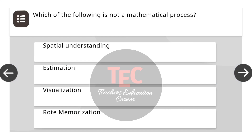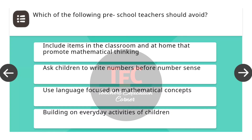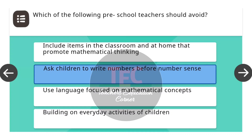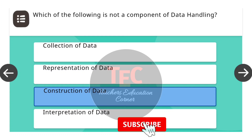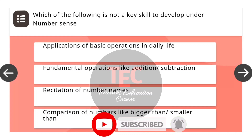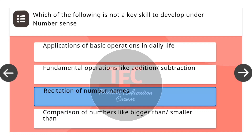Next question: Which of the following is not a mathematical process? The correct answer is rote memorization. Next question: Which of the following should preschool teachers avoid? The correct answer is asking children to write numbers before number sense. Next question: Which of the following is not a component of data handling? The correct answer is construction of data. Next question: Which of the following is not a key skill to develop under number sense? The correct answer is recitation of number names.